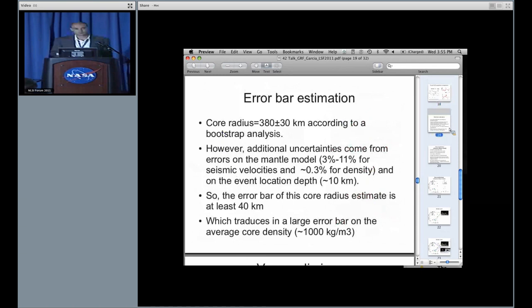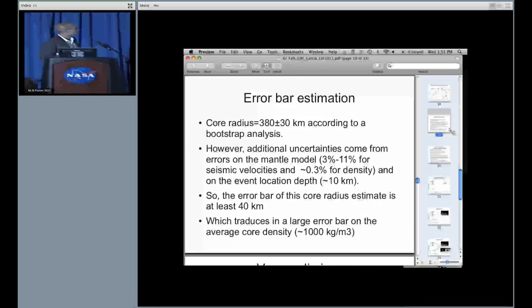Of course, we have to estimate the error bar. The error bar, according to the bootstrap, is around 30 kilometers. However, we still have additional uncertainties coming from the velocity model and also from the event location depth. So a conservative estimate, at least the error bar estimate on this core radius, is 40 kilometers, which translates into a large error for the average core density.